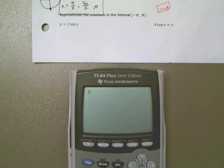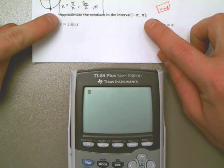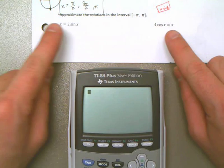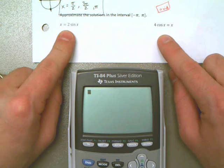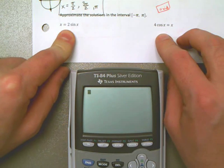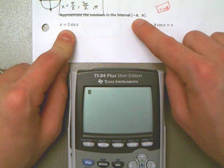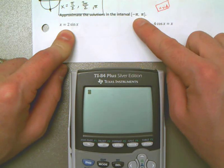Okay, in this video we're going to talk about how to approximate the solutions in the interval. And this is for a trig equation. So what they're saying is, what are the possible solutions between negative 180 degrees and positive 180 degrees? Negative pi to pi if we're talking radians.